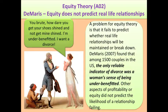A problem for equity theory is that it fails to predict whether real-life relationships will be maintained or break down. Damaris (2007) found that among 1,500 couples in the US, the only reliable indicator of divorce was a woman's sense of being under-benefited. Other aspects of profitability or equity did not predict the likelihood of a relationship failing.